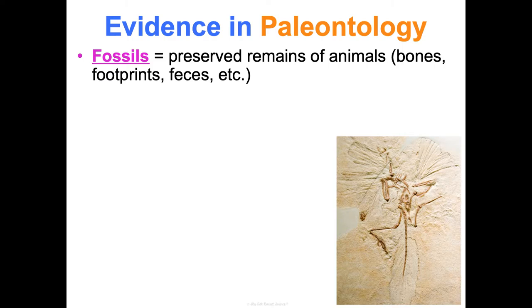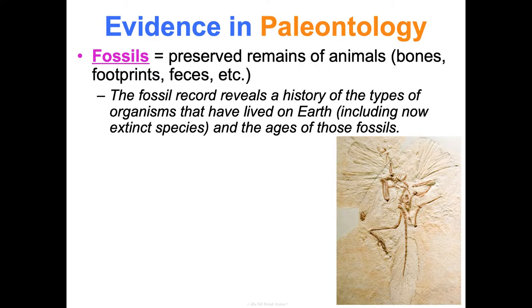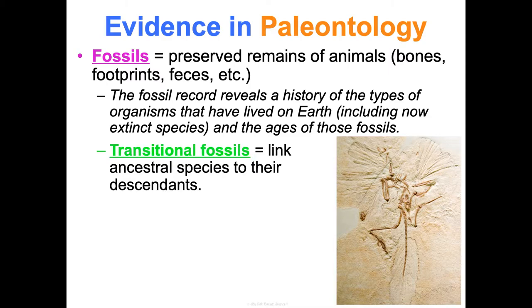First, paleontology. Fossils are preserved remains of animals — it could be bones, footprints, imprints, or feces. The fossil record shows us the history of the types of organisms that have lived on Earth, including things that are now extinct. We can also date those and estimate the ages of fossils. That really helps give us a timeline of how things have happened from an evolutionary perspective.